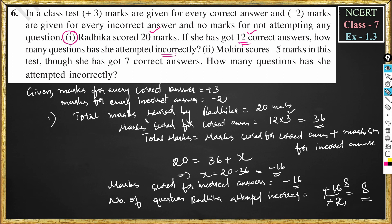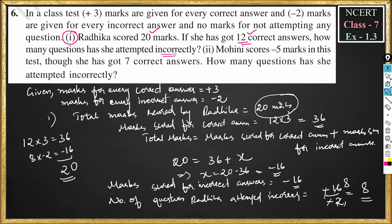To verify: 12 correct answers → 12 × 3 = 36. 8 incorrect answers → 8 × (−2) = −16. Adding: 36 + (−16) = 20. So 20 is the score Radhika got in the test. This confirms the solution.